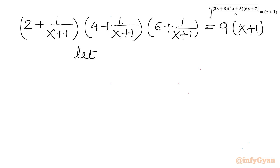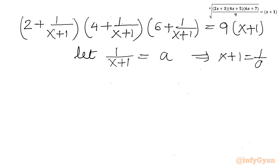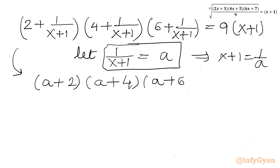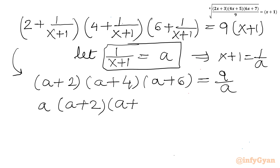Now let us assume 1/(x+1) = a, so x+1 = 1/a. Applying the substitution, the LHS becomes (a+2)(a+4)(a+6), and the RHS becomes 9/a. Moving a to the LHS, we get a(a+2)(a+4)(a+6) = 9. Remember, a = 1/(x+1).